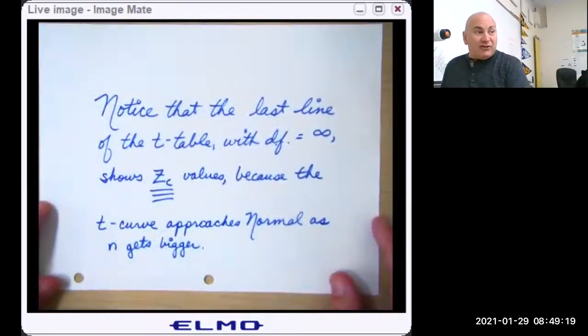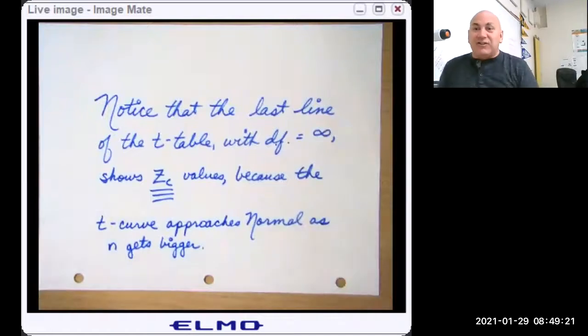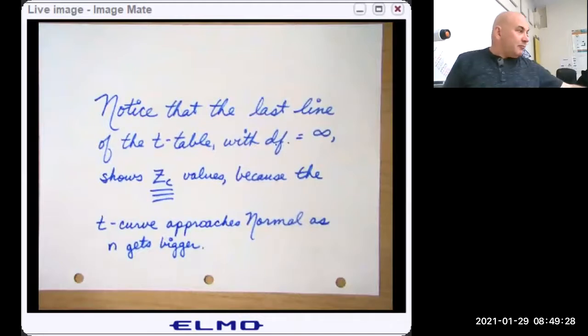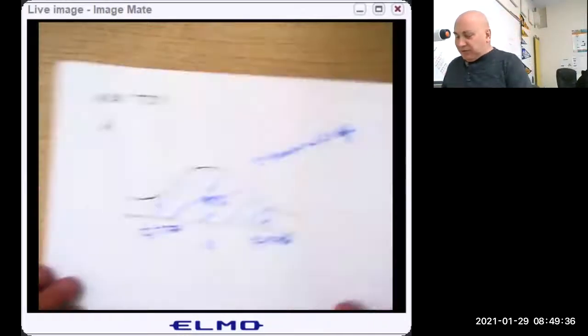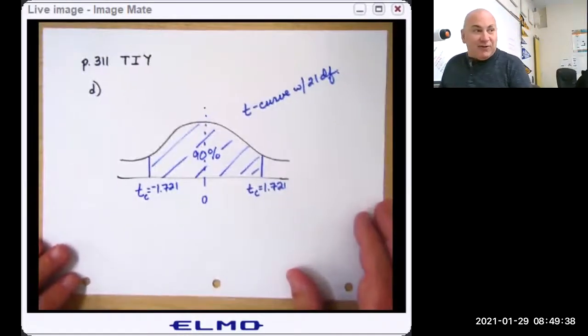I mentioned this earlier, and that just says the last line on the t-table is actually just normal curve values. If you look at page 311, the try it yourself problem.